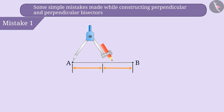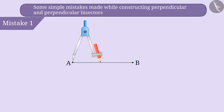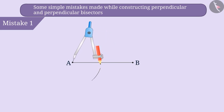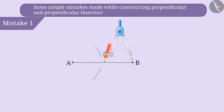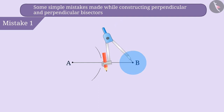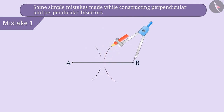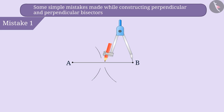Mistake 1. They take less than half the length of the line segment in the compass and place its pointed end on A and draw an arc on both sides of the line segment. Then, they place the pointed end of the compass on point B and attempt to draw an arc. But since less than half the length was taken in the compass, they fail to draw an arc intersecting the previously formed arc.